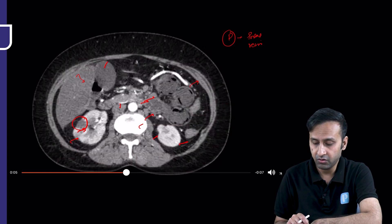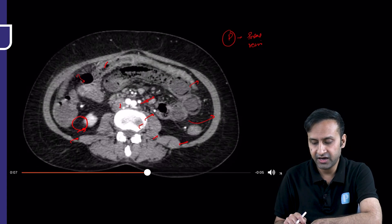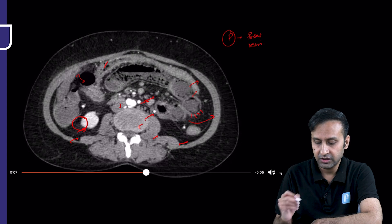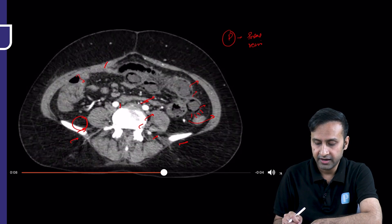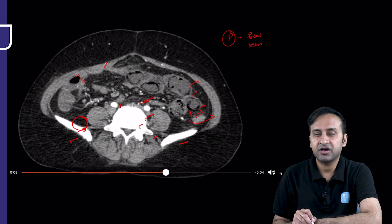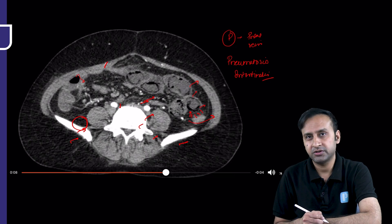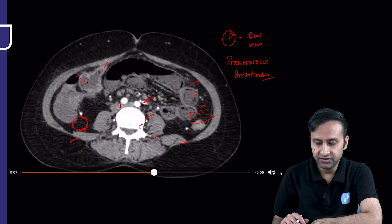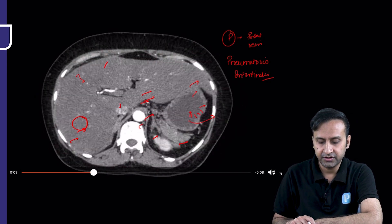Now look at the bowel — it is showing a very characteristic sign. Air is seen in the non-dependent part, which is expected, but if you look carefully, air is also located along the dependent part. Air should never be seen in the dependent part of the bowel wall. This appearance — air within the bowel wall in the non-dependent and dependent walls — is called pneumatosis intestinalis. In the small bowel, pneumatosis intestinalis is always pathological. In this case, the SMA is almost completely occluded, confirming we are dealing with mesenteric ischemia.